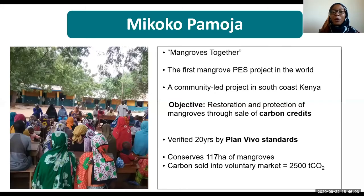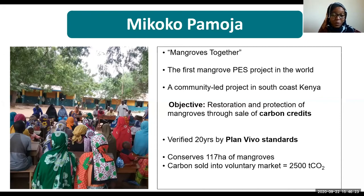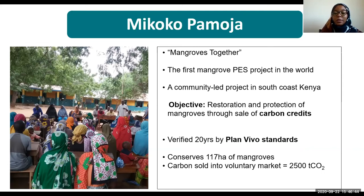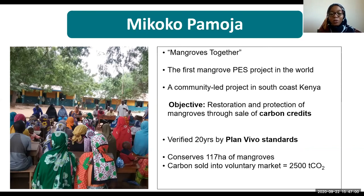Mikoko Pamoja is a Swahili statement meaning 'mangroves together.' It is the first ever community-led project to engage in the conservation, restoration, and protection of mangrove ecosystems through the payment for mangrove carbon credits. Our main objective is to restore and protect the mangrove ecosystem through the sale of carbon credits, verified by the Plan Vivo organization, to sell our carbon credits for 20 years. The project was incepted in 2012, we began selling credits in 2013.